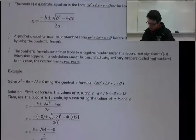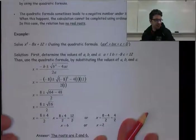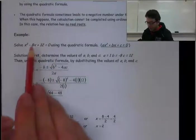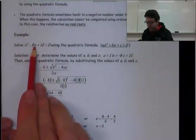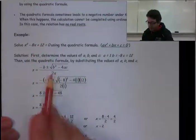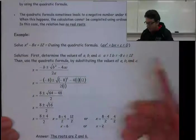Let's see how we can use this quadratic formula. Here we have x² - 8x + 12 = 0. You could factor that, this one's fairly simple to factor. Or we can use the quadratic equation.